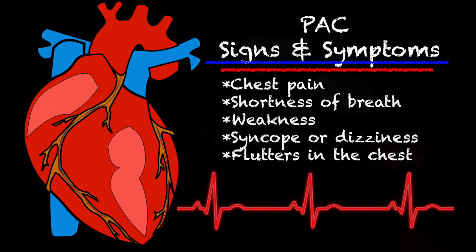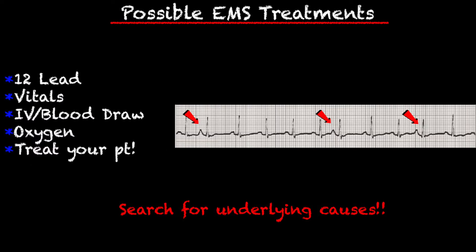Some of the signs and symptoms of premature atrial complexes can include chest pain, shortness of breath, weakness, syncope or dizziness, even flutters in your chest, nausea, vomiting, and being diaphoretic.